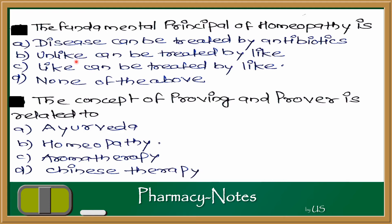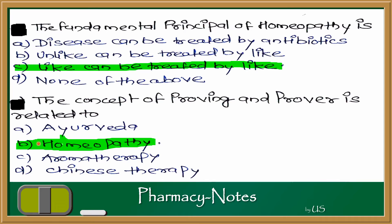Next question: the concept of proving and prover is related to which system? The options are Ayurveda, Homeopathy, Aromatherapy, and Chinese therapy. Since like-by-like therapy involves proving and prover, the related system is Homeopathy. Proving and prover is a concept based in homeopathy.